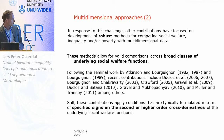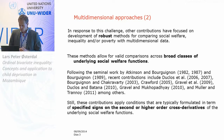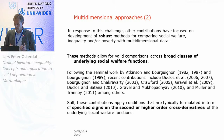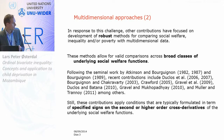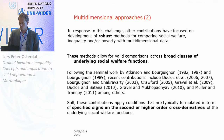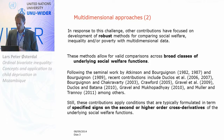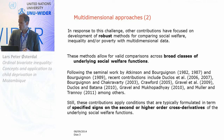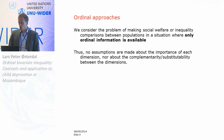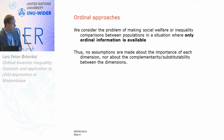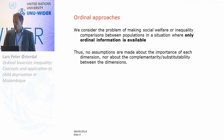However, there is an important difference. The work mentioned here all applies conditions — implicitly or explicitly — that relate to specified signs on the second or higher order cross derivatives of the underlying social welfare function. What we do here is that we are interested in ordinal approaches. That is, we consider problems of making comparisons of social welfare or inequality between populations in situations where we only use the ordinal information available. That means we make no assumptions about the importance of each dimension, and in particular, we make no assumptions about the complementarity or substitutability between the dimensions.